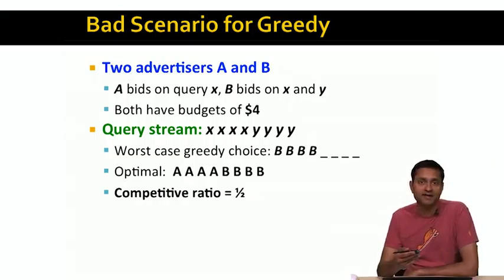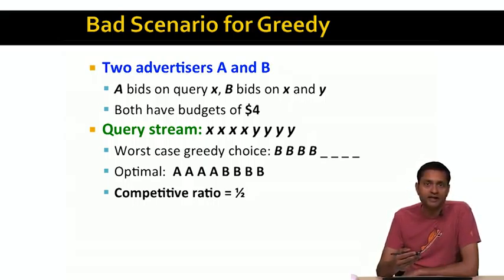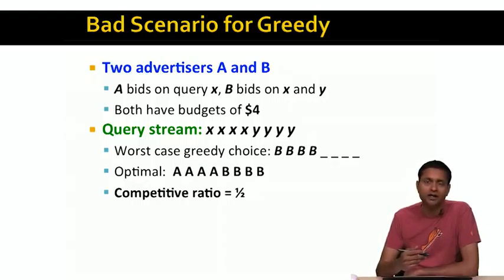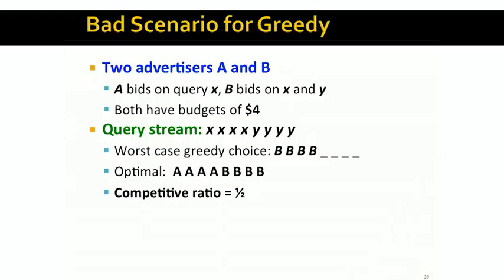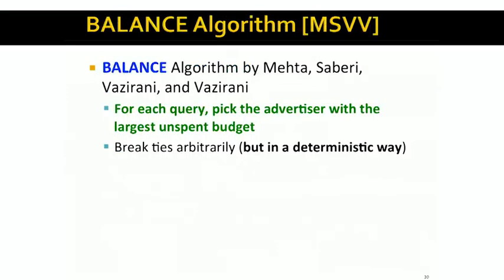This is a worst-case example showing that the greedy algorithm can do half as well as the optimal algorithm. It's straightforward to prove that the greedy algorithm cannot do worse than this, and the competitive ratio of the greedy algorithm is exactly one half. The proof is quite similar to the proof for the online bipartite graph matching problem covered in an earlier lecture. The question is: is there an algorithm with a competitive ratio better than one half for this problem? And it turns out there is.